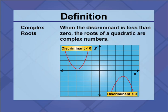Complex roots. When the discriminant is less than zero, the roots of a quadratic are complex numbers.